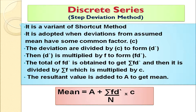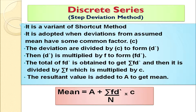The deviations d are divided by common factor c to form d' (d dash). Then multiply frequencies by d' to get the fd' column and find Σfd'. The formula for step deviation method is: x̄ = A + (Σfd' / n) × c, where n = Σf.